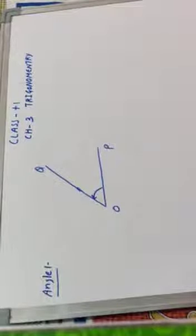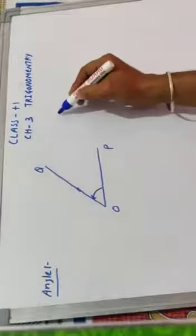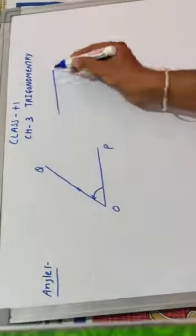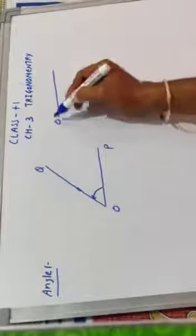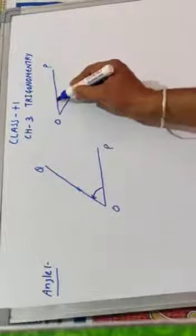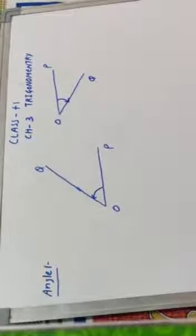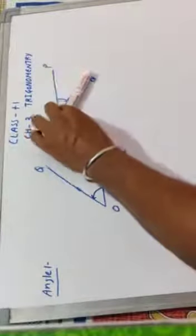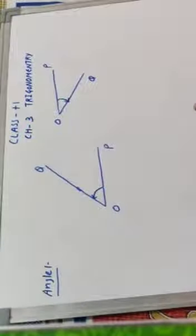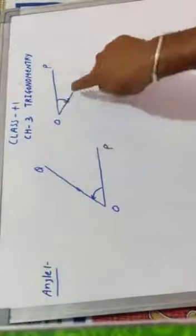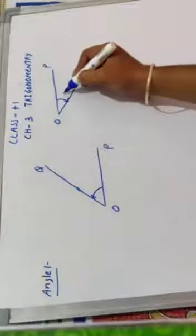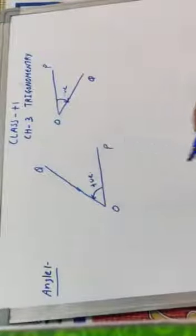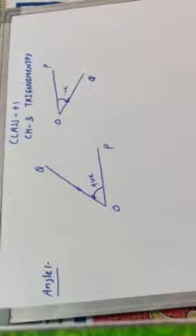So if the rotation is anticlockwise, then my angle will be positive. If the rotation is clockwise, suppose the initial line and terminated line positions are switched, then the rotation is clockwise, which means this is a negative angle. This is the concept of angle. Now we have two types of angle measurements.